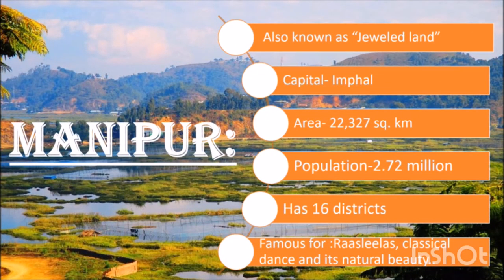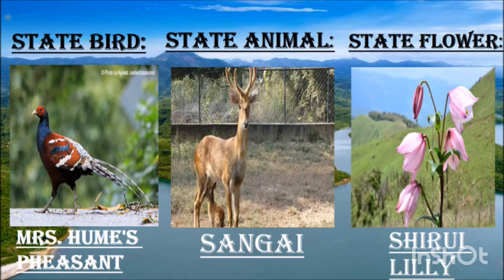Manipur is also known as the 'jeweled land' because it is surrounded by nine beautiful hills with an oval-shaped valley at the center, looking like a naturally made jewel. The capital is Imphal. The area of Manipur is 22,327 square kilometers. It is bordered by Nagaland to the north, Mizoram to the south, Assam in the west and Myanmar in the east. The population is 2.72 million and it has 16 districts. It is famous for its beautiful Ras Leela dance. The state bird is Mrs. Hume's Pheasant, the state animal is the Sangai — a type of deer found only in Manipur — and the state flower is the Shirui Lily.